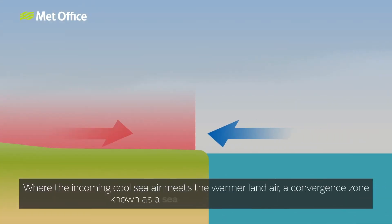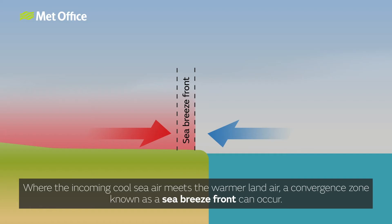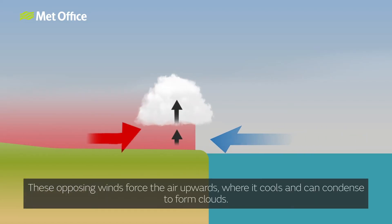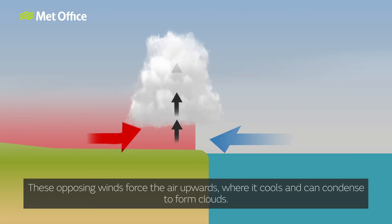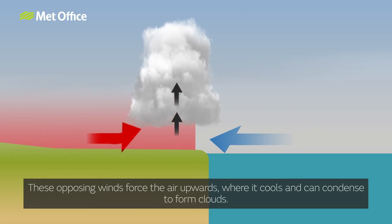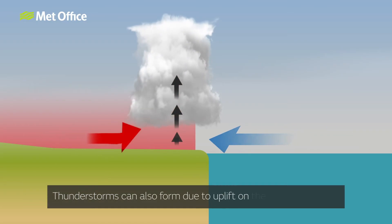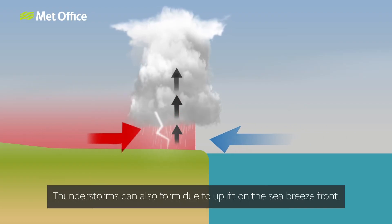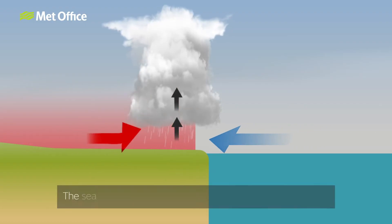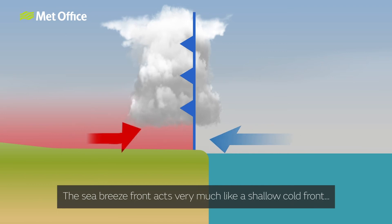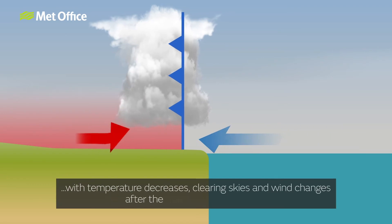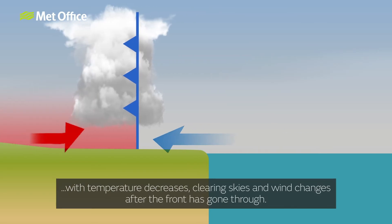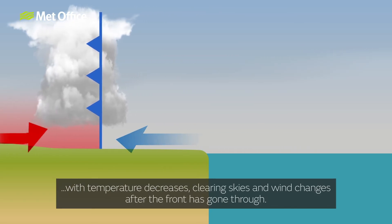Where the incoming cool sea air meets the warmer land air, a convergent zone known as a sea breeze front can occur. These opposing winds force the air upwards where it cools and can condense to form clouds. Thunderstorms can also form due to the uplift on the sea breeze front. The sea breeze front acts very much like a shallow cold front, with temperature decreases, clearing skies, and wind changes after the front has gone through.